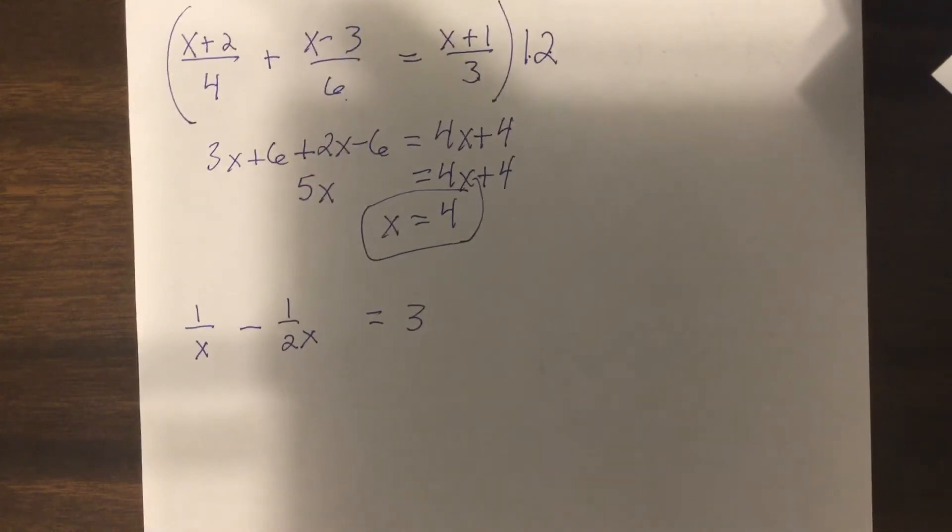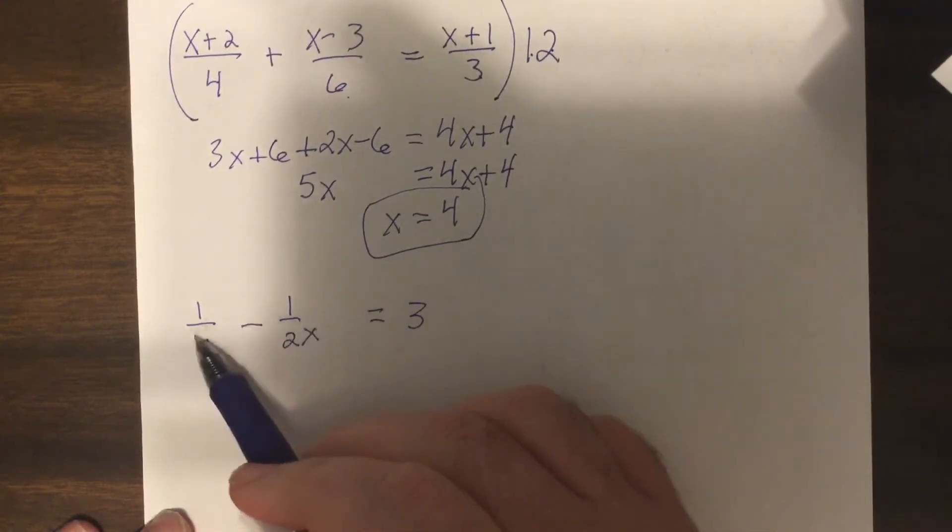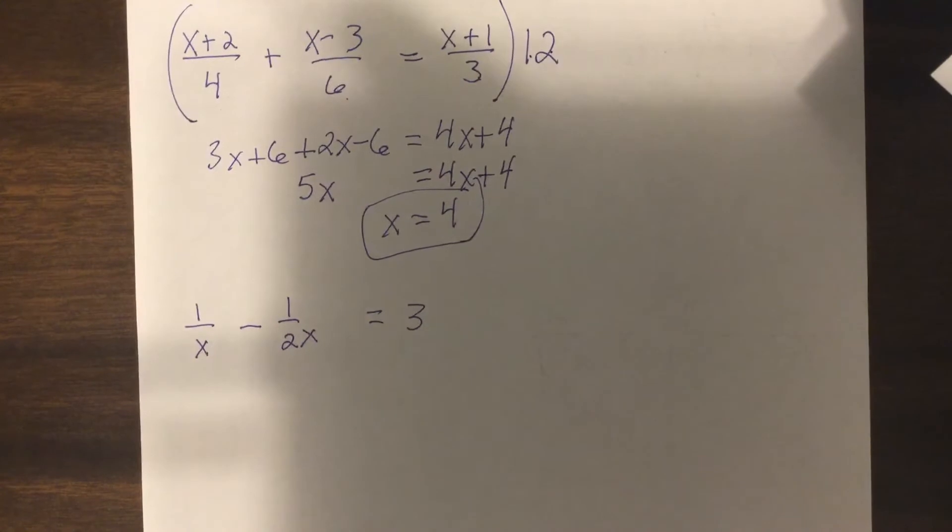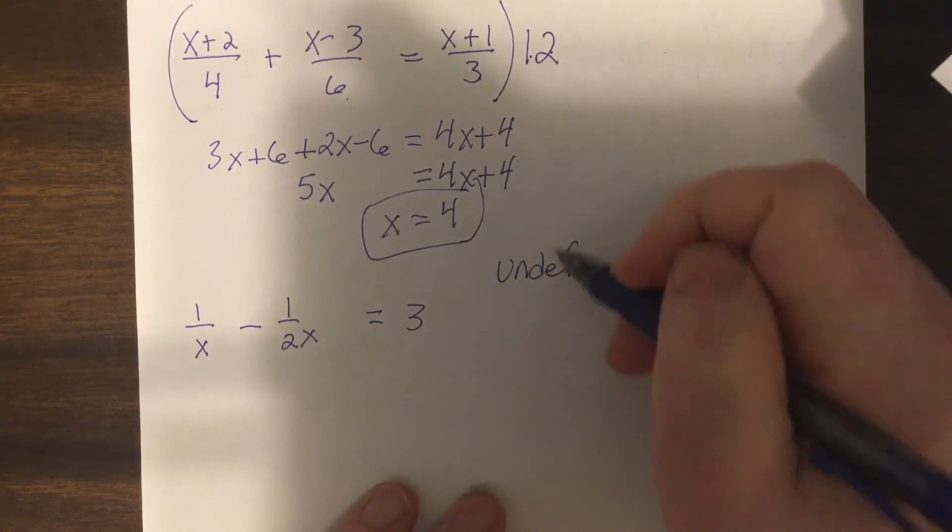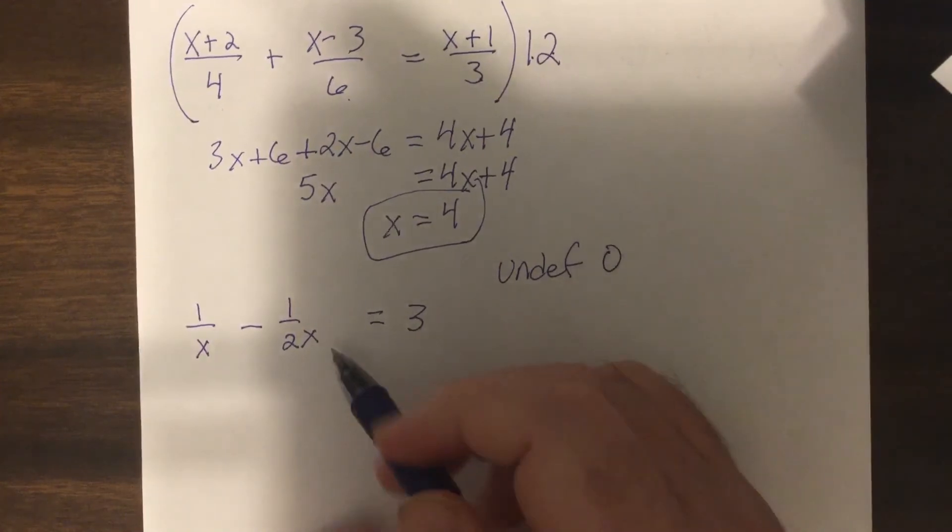Now if there's a variable in the denominator, you have to worry about the undefined. So either you're going to state the domain or you're going to state the undefined, depending on what the teacher is asking for. Let's do the undefined.